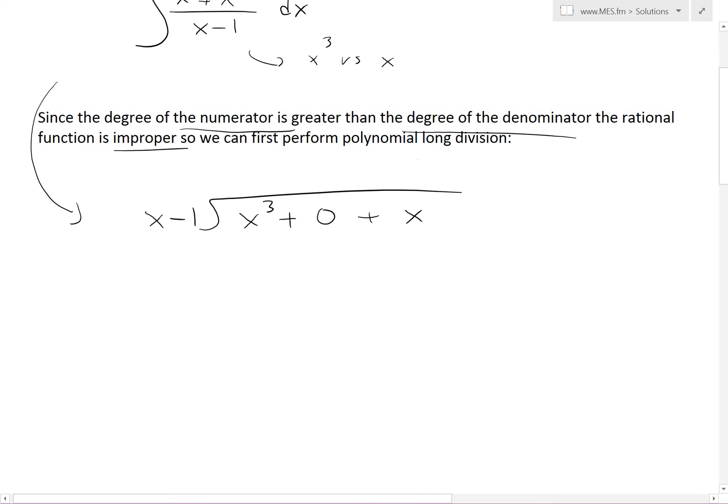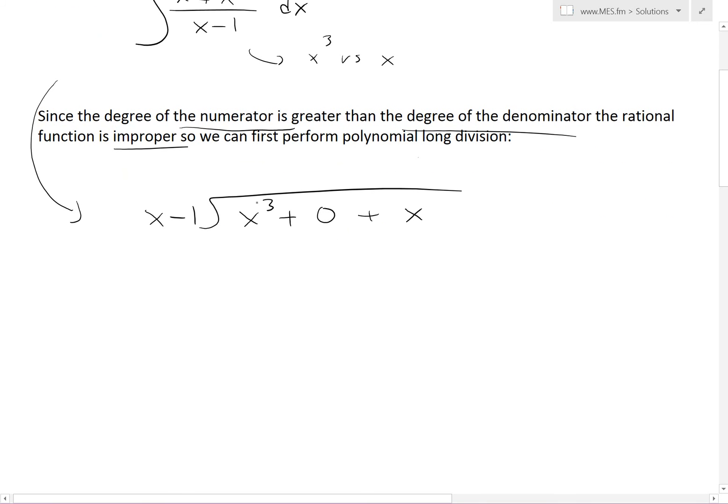We need to find what multiplies by x to get x³, which is x². So x² times x gives x³, and x² times -1 gives -x². We subtract: the x³ terms cancel, and 0 minus negative x² gives us positive x².